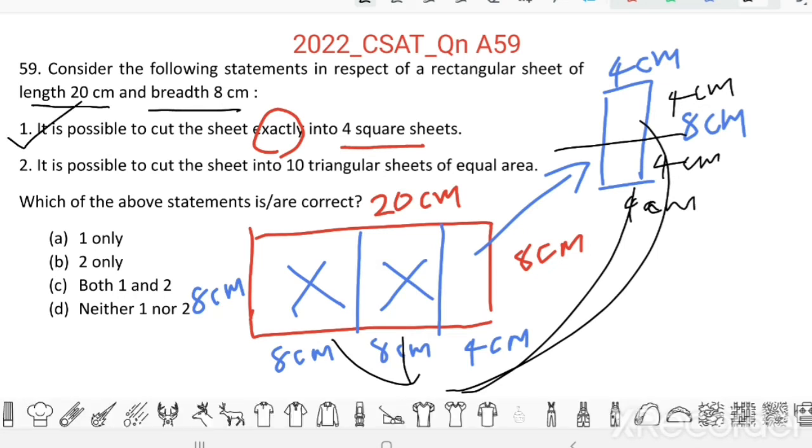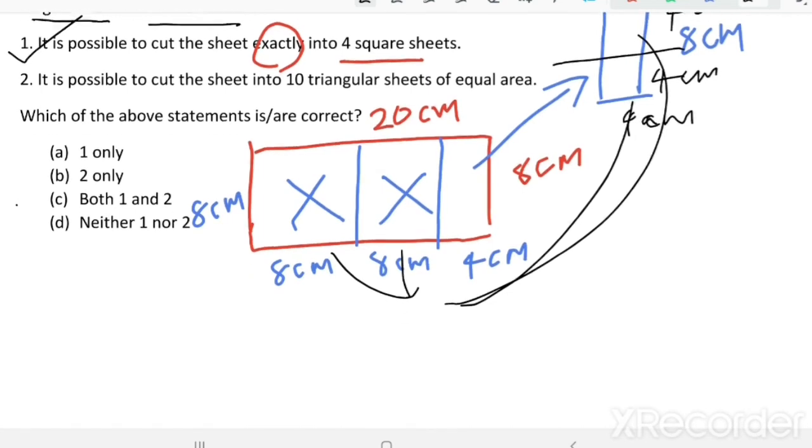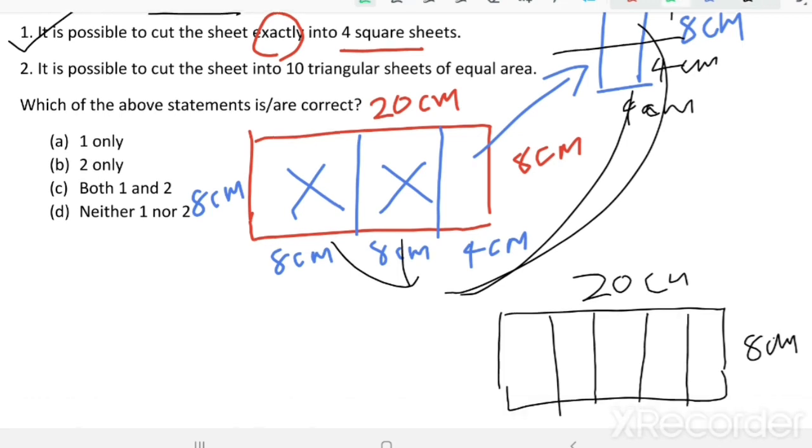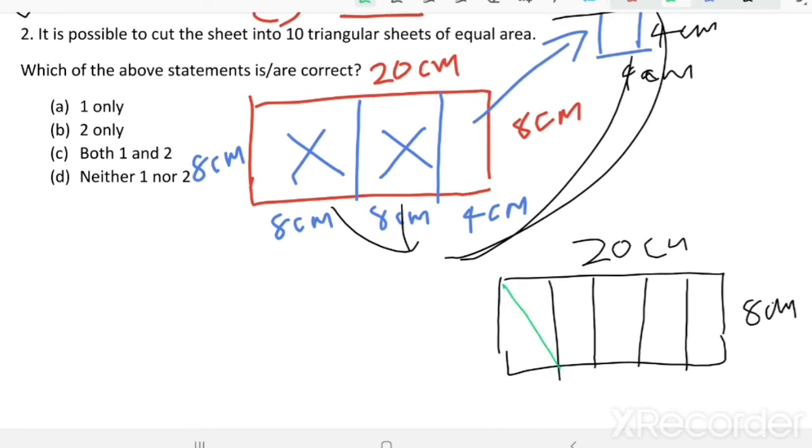Now see statement 2. It is possible to cut the sheet into 10 triangular sheets of equal area. This is the rectangular sheet 20cm and 8cm. First, you cut this into 5 equal sheets. Then each sheet we can cut into 2 triangular sheets. And all of them have same area.